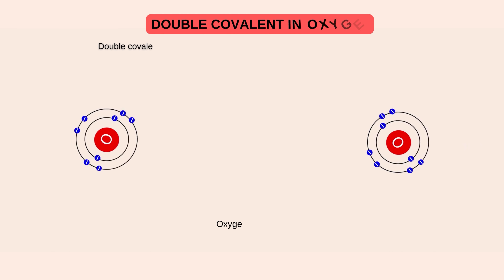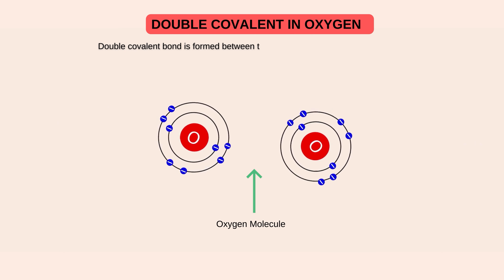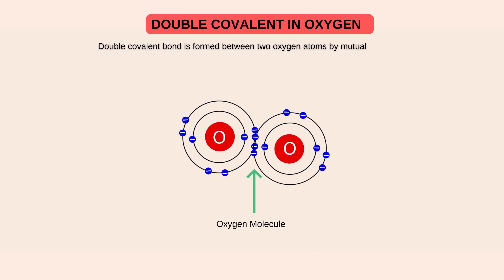Is ki examples mein sab se common example oxygen molecule ki hai. Oxygen atom, as we all know, its atomic number is eight and it has six electrons in its valence shell. Stability ko achieve karne ke liye, oxygen ko mazeed 2 electron ki zarurat hai. Apne in 2 electron ki zarurat ko mukammal karne ke liye, oxygen dusri oxygen atom ke saat dho dho electron ki mutual sharing kerta hai, aur oxygen molecule mein convert ho jata hai.